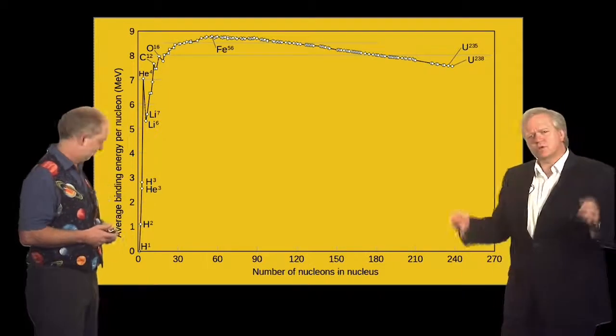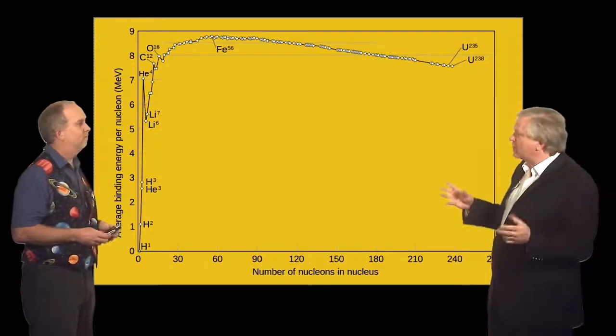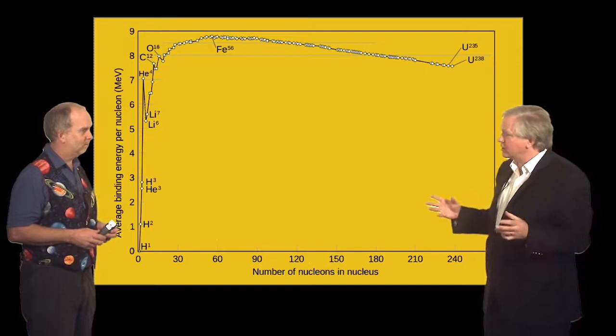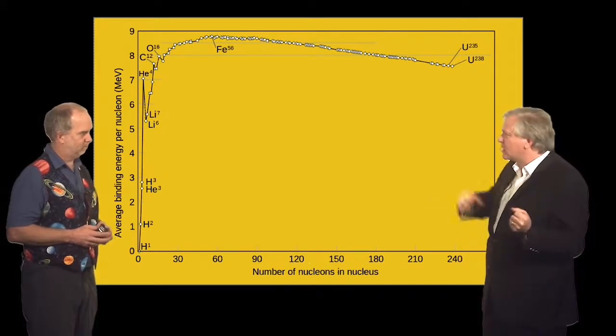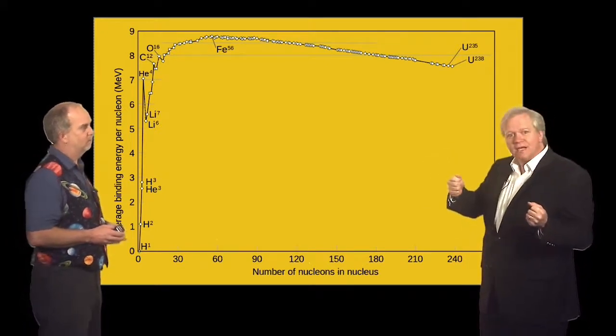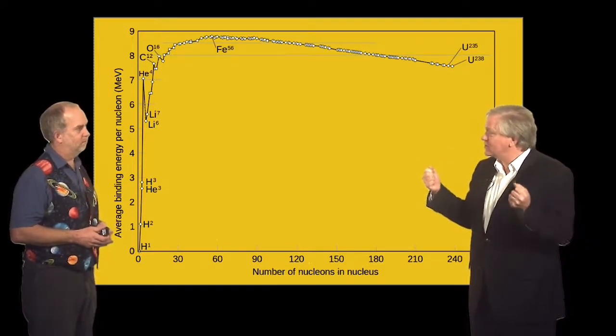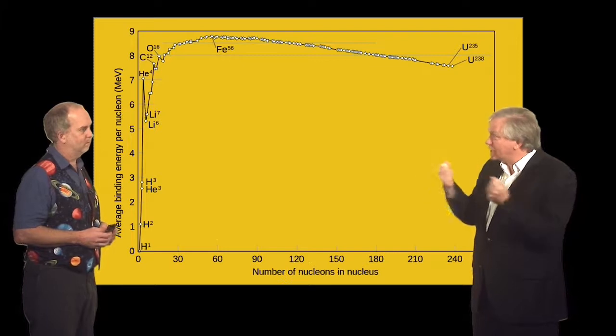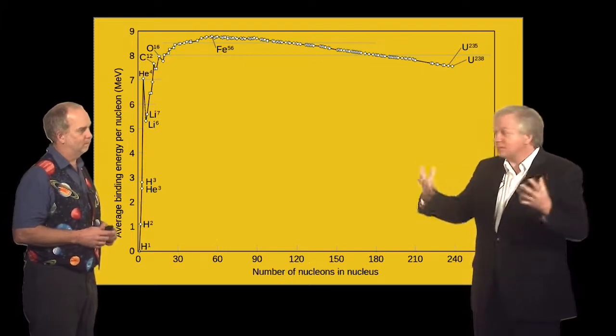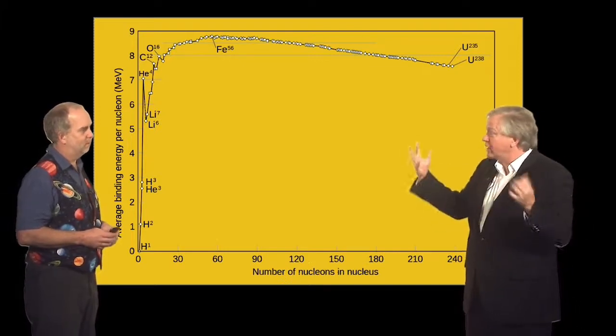Okay, to remind us how we're going to get energy out from E equals mc squared is we're going to take one type of atom and transform it to another, and if that second atom weighs less or has a lower mass than the first atom, then there's a change in mass, and by E equals mc squared we get nuclear energy out.